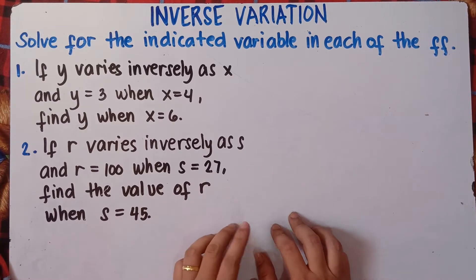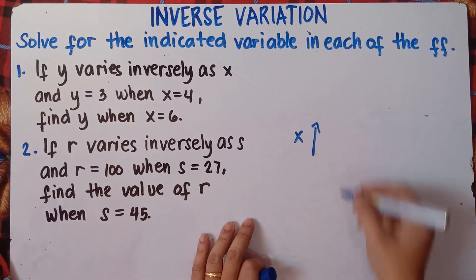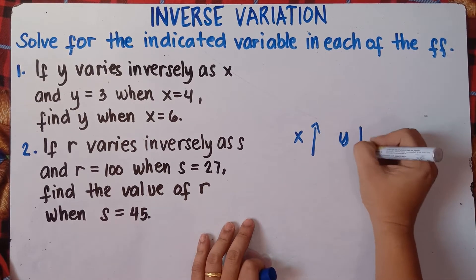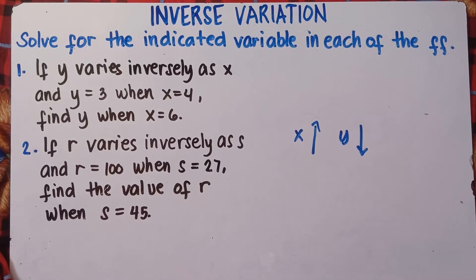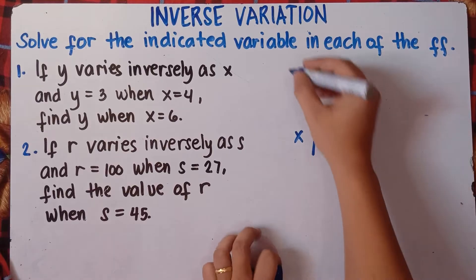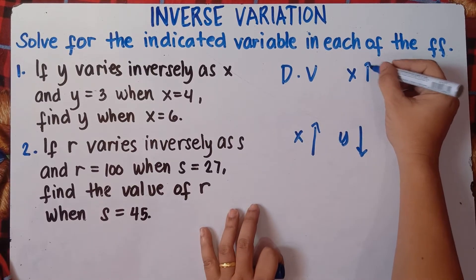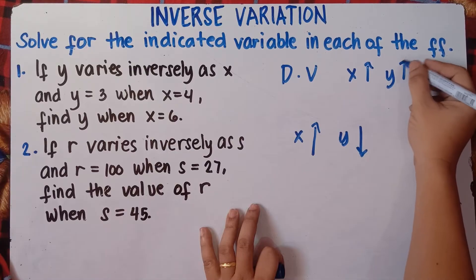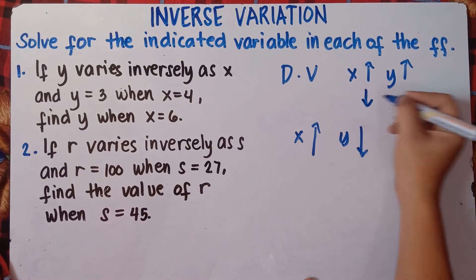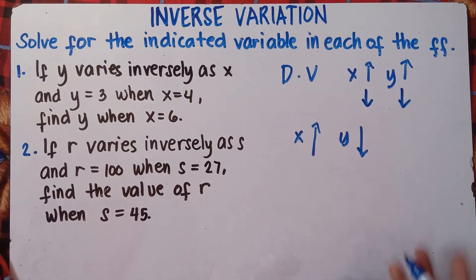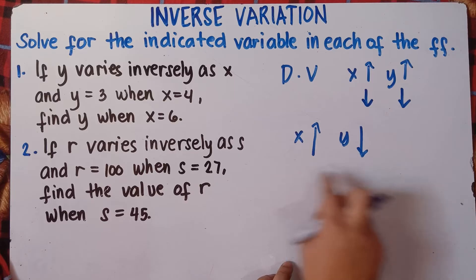Do not forget, class: in inverse variation, if our x value increases, our y value decreases. That's actually the opposite direction — different from direct variation. In direct variation, if x increases, y also increases, and if x decreases, y also decreases. So in inverse variation, it's the opposite direction.